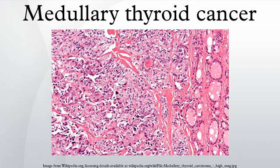Approximately 25% of medullary thyroid cancer is genetic in nature, caused by a mutation in the RET proto-oncogene. This form is classified as familial MTC. When MTC occurs by itself it is termed sporadic MTC. When it coexists with tumors of the parathyroid gland and medullary component of the adrenal glands, it is called multiple endocrine neoplasia type II. It was first characterized in 1959.